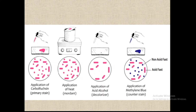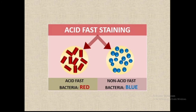The acid fast microorganisms are Mycobacterium tuberculosis and Mycobacterium leprae. These questions can also be asked in competitive examinations like GPAT. Acid fast bacteria appear red at the end of staining, while non-acid fast bacteria appear blue.